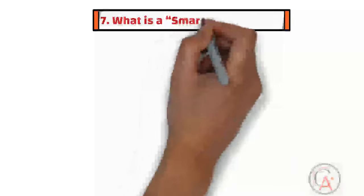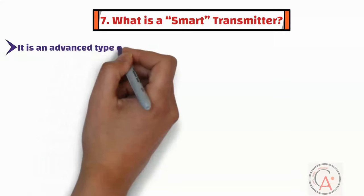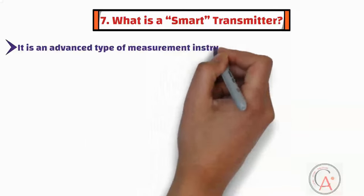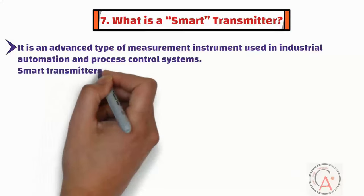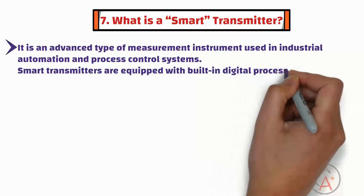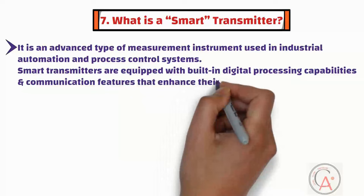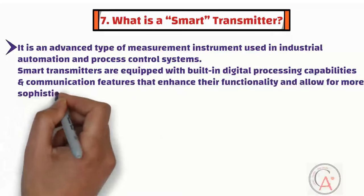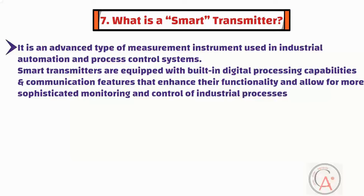The seventh question is: what is a smart transmitter? A smart transmitter, also known as an intelligent transmitter, is an advanced type of measurement instrument used in industrial automation and process control systems. Unlike traditional analog transmitters, smart transmitters are equipped with built-in digital processing capabilities and communication features that enhance functionality and allow for more sophisticated monitoring and control of industrial processes.